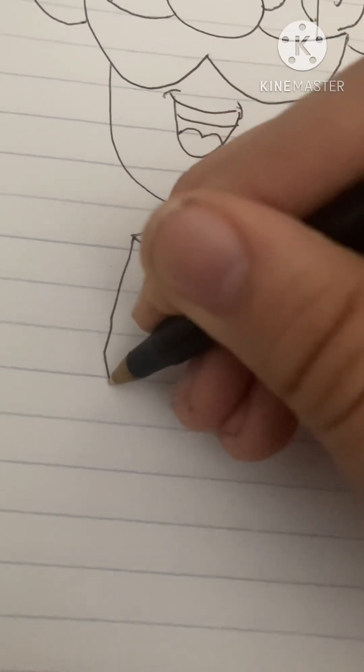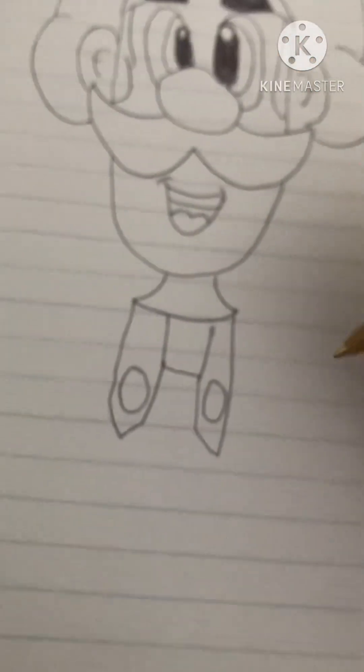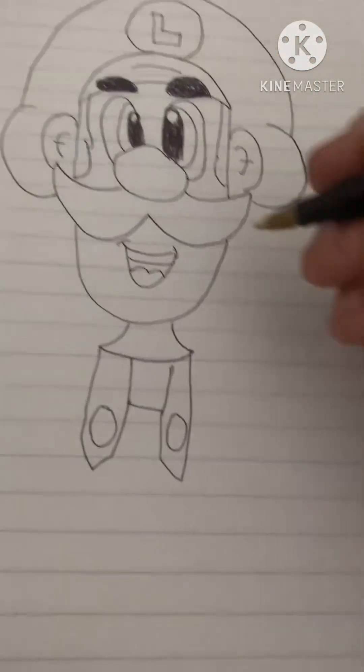And now what we're gonna do, we're gonna go down like this way and like this way, and then go up. Same thing here. This way and up. And now we're gonna do circles here. One circle here and one circle here for his buttons.